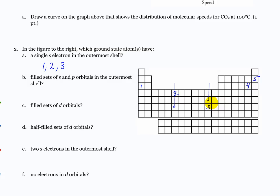Which ones have filled sets of S and P orbitals? Just five. A filled set of D orbitals? Just three. Half-filled set? Just two. Two electrons — or two S electrons — in the outermost shell? Four and five. Four and five will both have two S electrons and then some P electrons also. Two and three won't, because of that one electron that jumps back to the D.